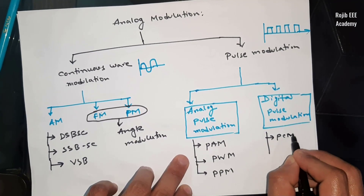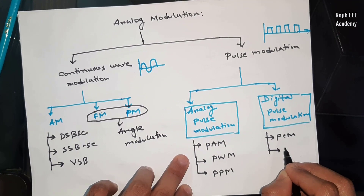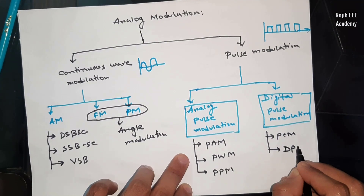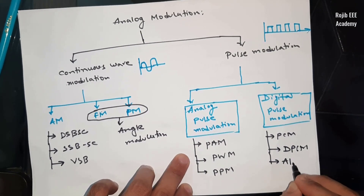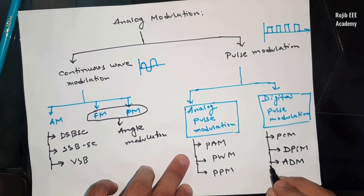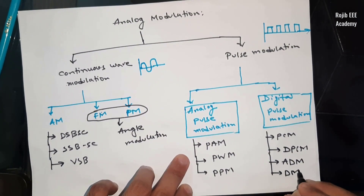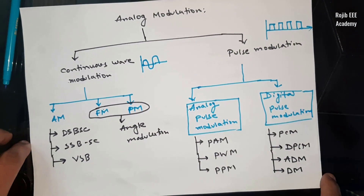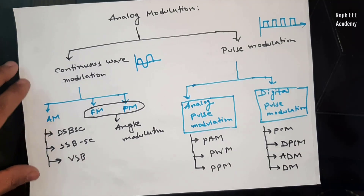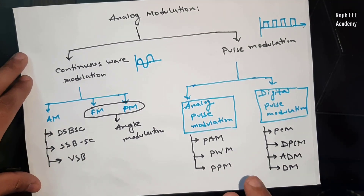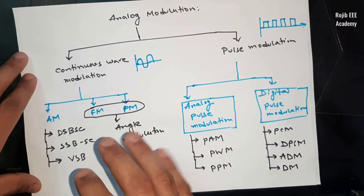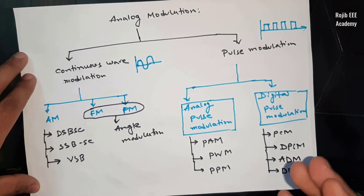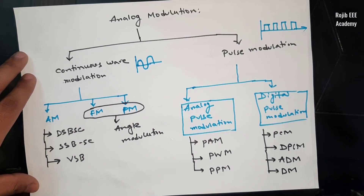Under digital pulse modulation, we have: PCM — Pulse Code Modulation, DPCM — Differential Pulse Code Modulation, ADM — Adaptive Delta Modulation, and DM — Delta Modulation. Each of these will be covered in separate videos with full details. The modulation topic is very important for job exams and university exams.